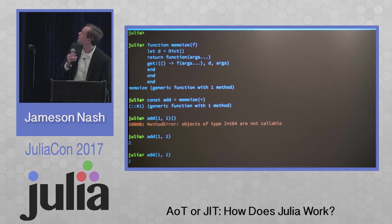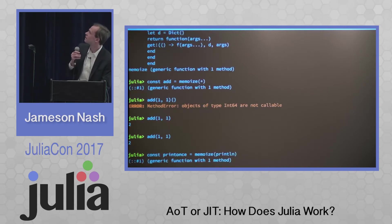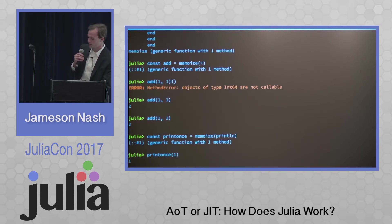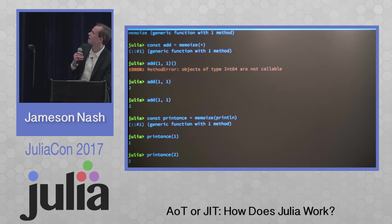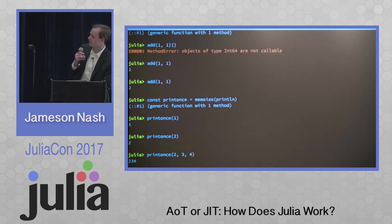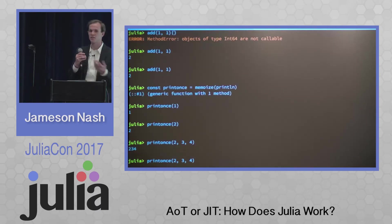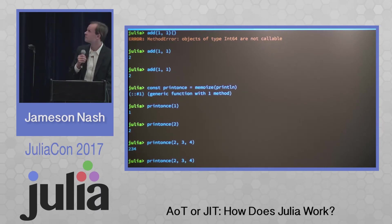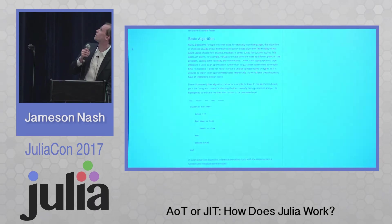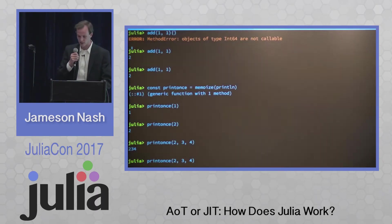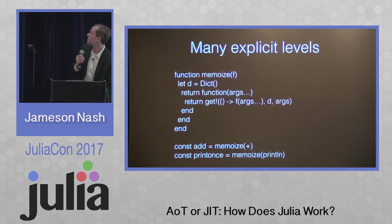So we might instead define something with side effects, like printing. When we print something, we see every time it prints it gives a different result. But then if we try to print it again, we see that it is not returning the result. This is one way we can make sure the compiler is only running something once — and if that was a much more expensive function, it could be saving quite a bit of time.